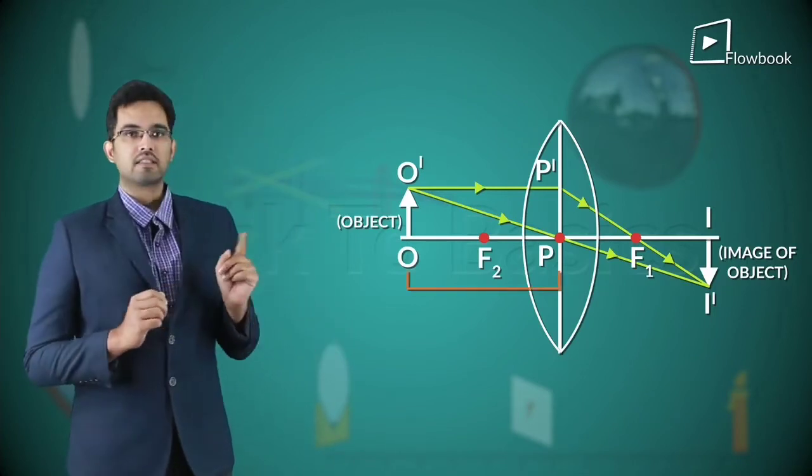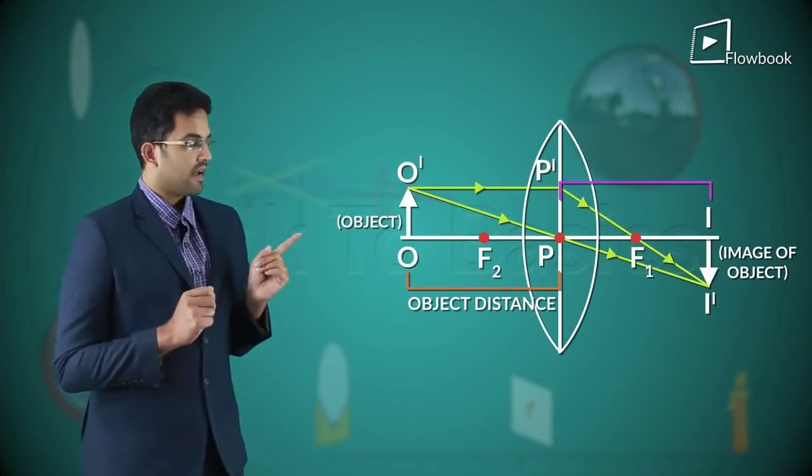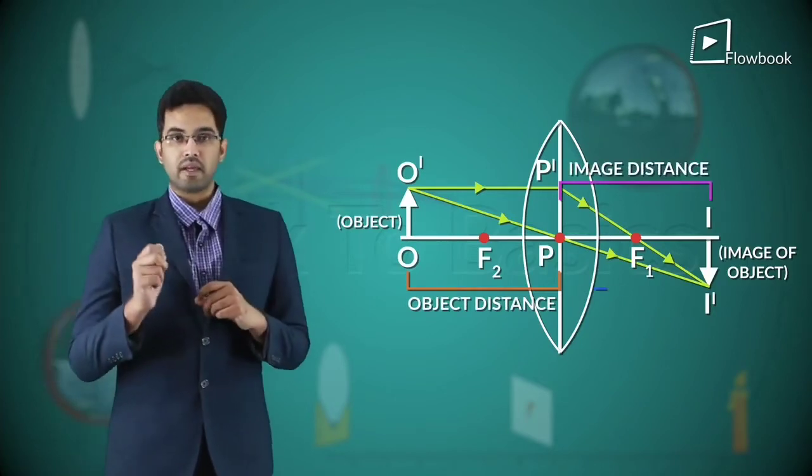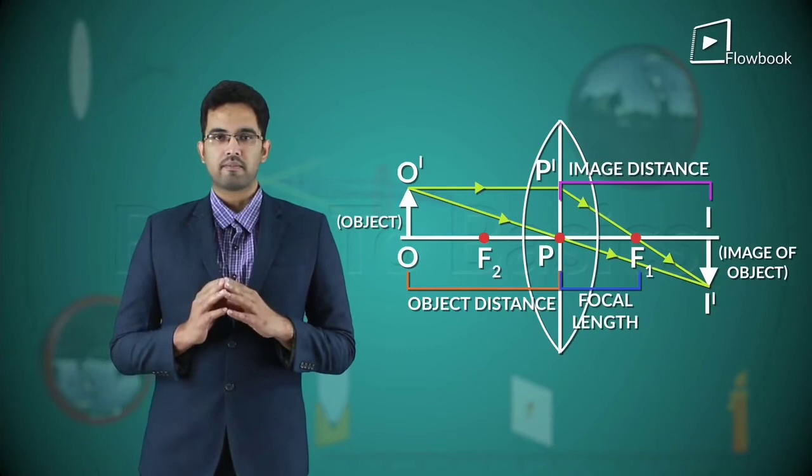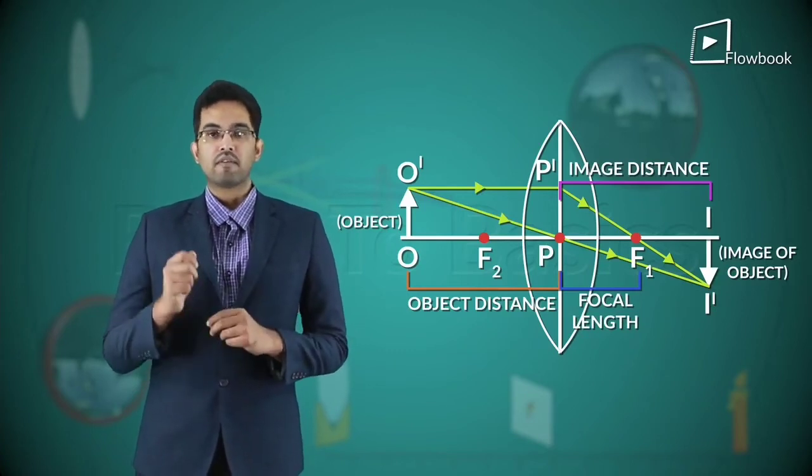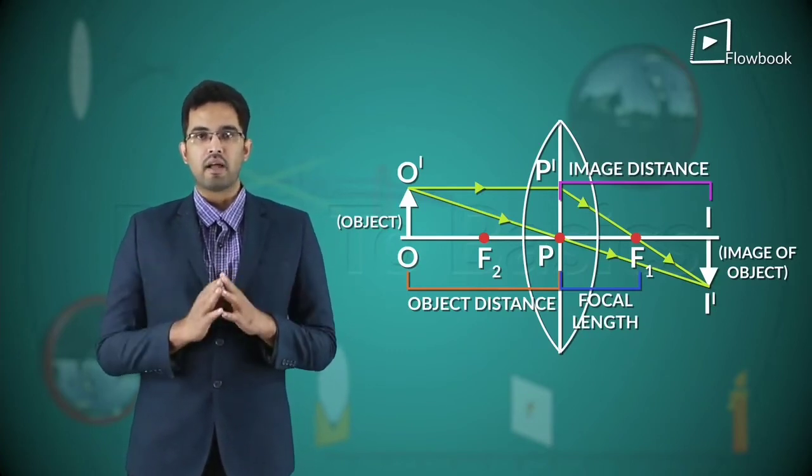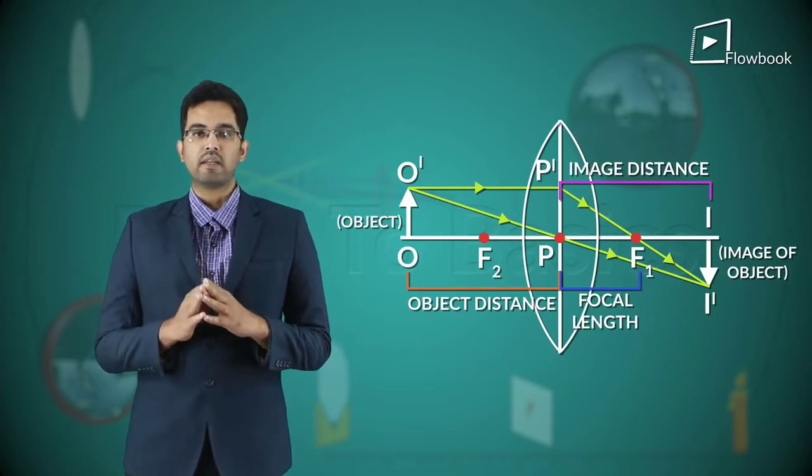Now, PO is the object distance, PI is the image distance, and PF1 is the focal length. In this video, we will try and derive a lens formula which will give us a relation between these three.